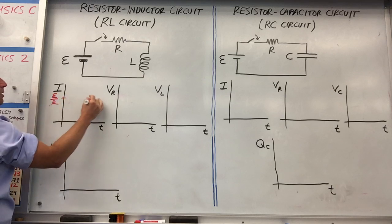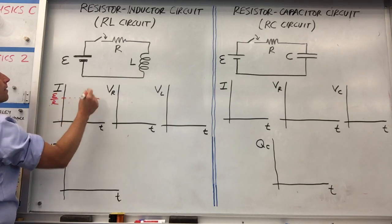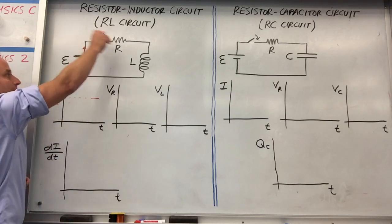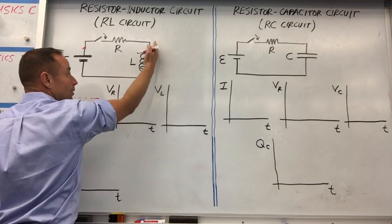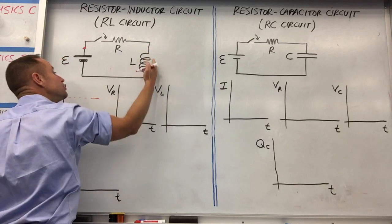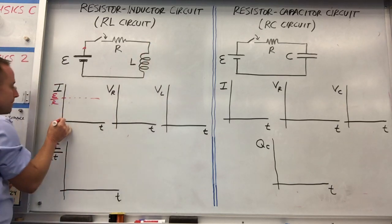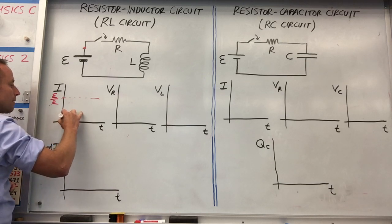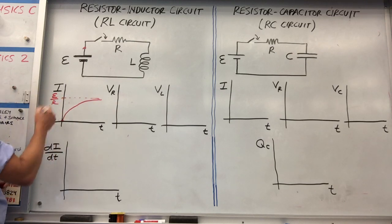Eventually it's going to get up to this level. In the short term, when you first connect this, the inductor is going to act like a break. It's going to fight back because of the changing flux. So the current is going to start really low and then build up to the value from Ohm's Law, epsilon over R.